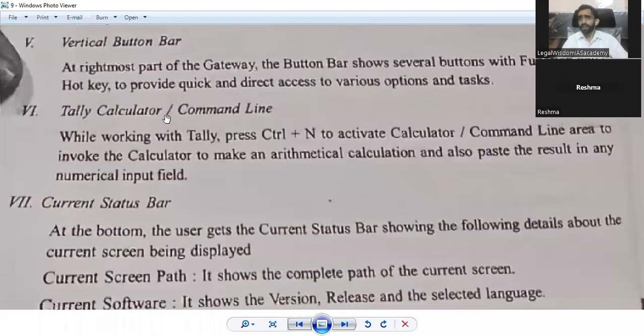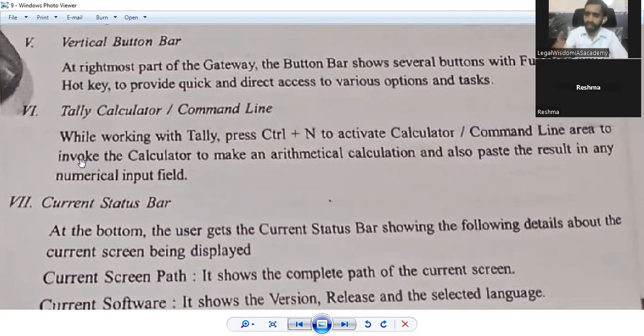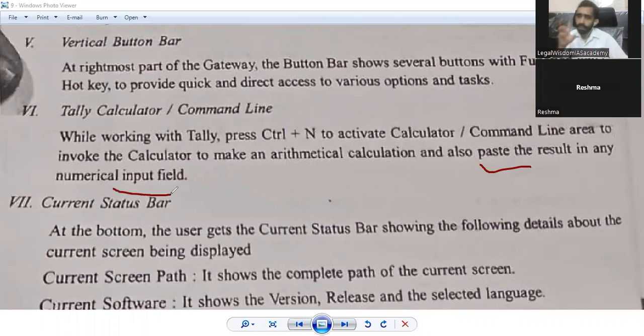The sixth one, Tally calculator or command line. While working with Tally, press Control plus N to activate calculator or command line area to invoke a calculator. If you want to do some basic calculation, there is a facility of using the calculator. What is the shortcut? Control plus N to invoke, to start the calculator, to make an arithmetic calculation and also paste the result in any numerical input. When you do Control plus N entry, a calculator opens up. You can do your calculation and the facility is whatever result is on the calculator, you can copy paste into your data, into your field, and update the entry. This facility Tally is providing.